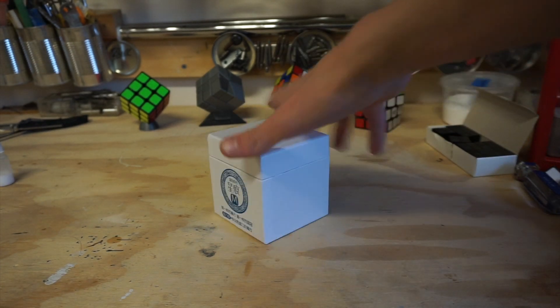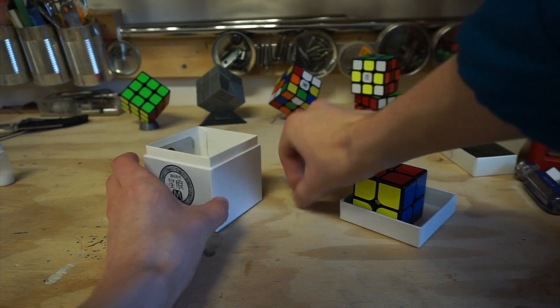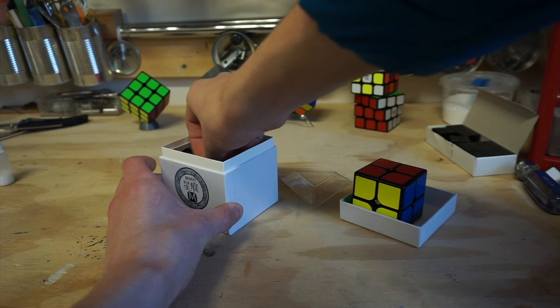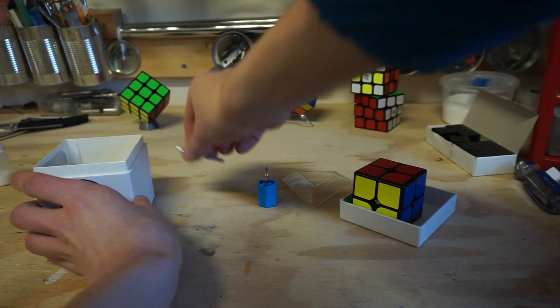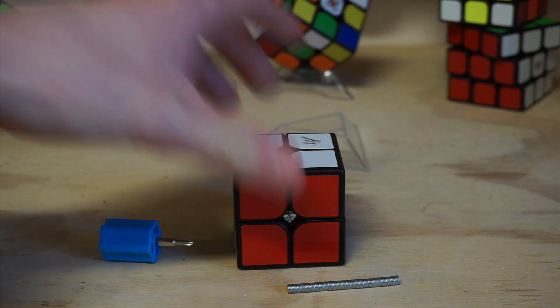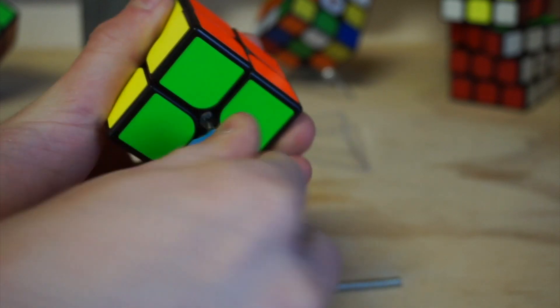I got my Guoguan Xinghen 2x2 a couple days ago, but I wasn't really satisfied with the strength of the magnets. They're just really weak, so I decided to glue some N50 magnets that I had lying around to strengthen up the cube and make it a little bit stronger.